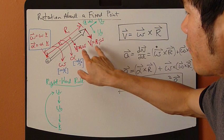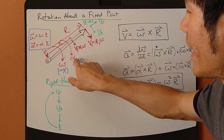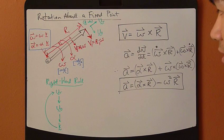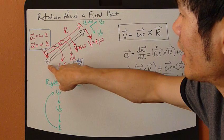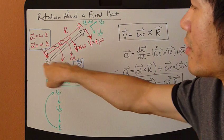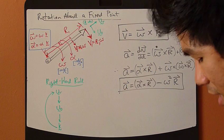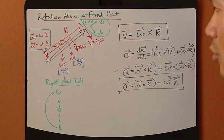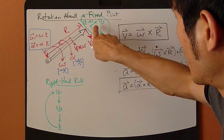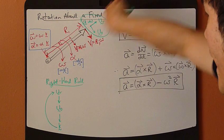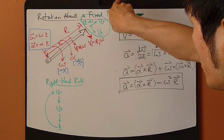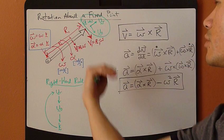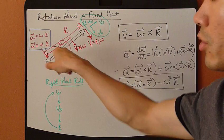Just like velocity and acceleration, the angular velocity and angular acceleration have direction as well — they are vectors. The vectors are actually in the K direction, which is in or out of the board. Using the radial-transverse coordinate system, we have the R direction pointing out from the origin, the theta direction which is the rotational direction, and K which is either in or out of the board.